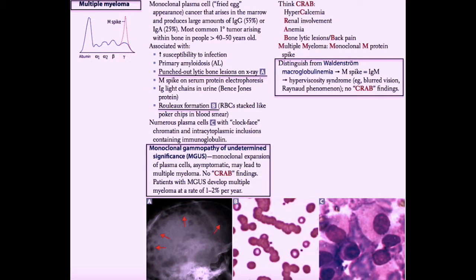The renal failure in multiple myeloma is actually secondary to multiple mechanisms. But one of them is that overproduction of the light chain variety of immunoglobulin actually causes too much light chain, and that light chain can get stuck in the renal tubules and cause nephropathy and acute renal failure.